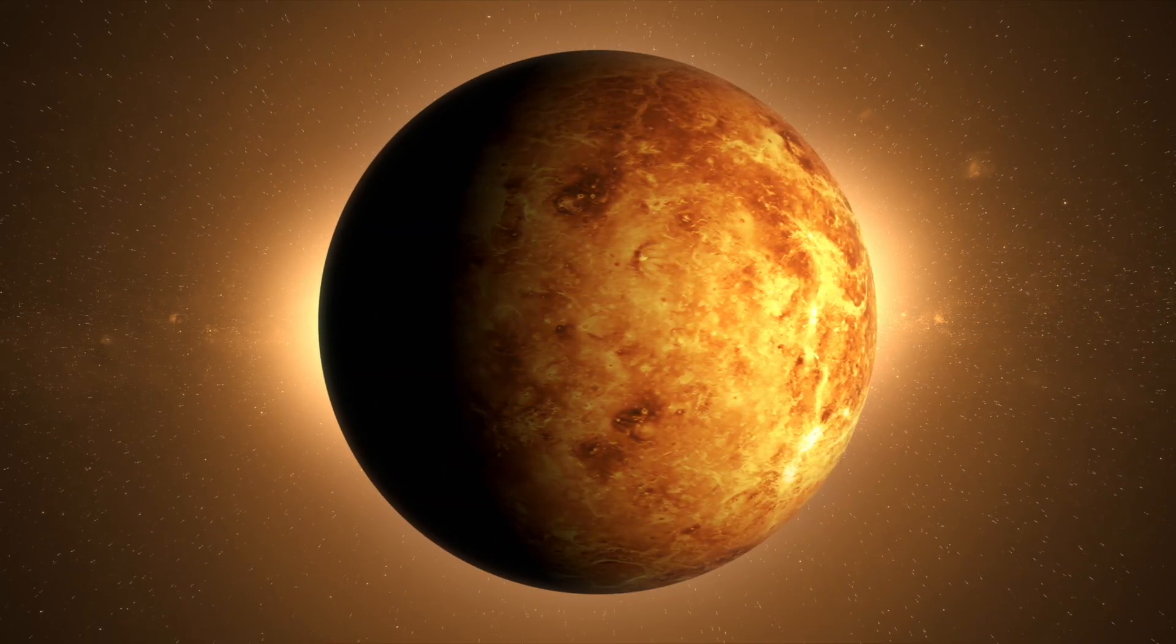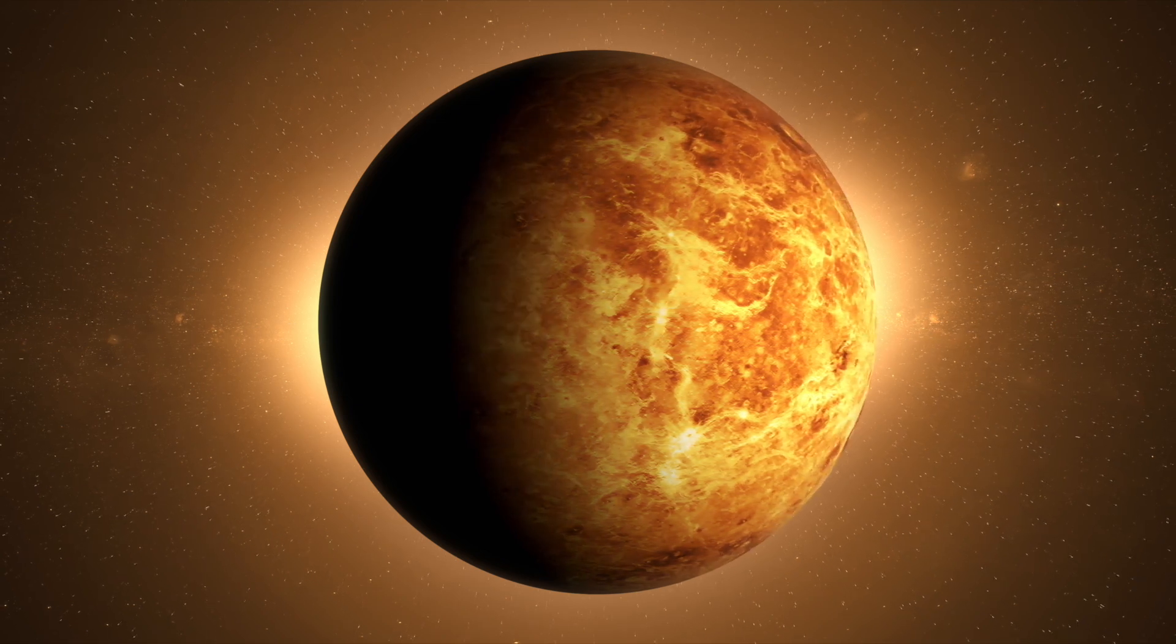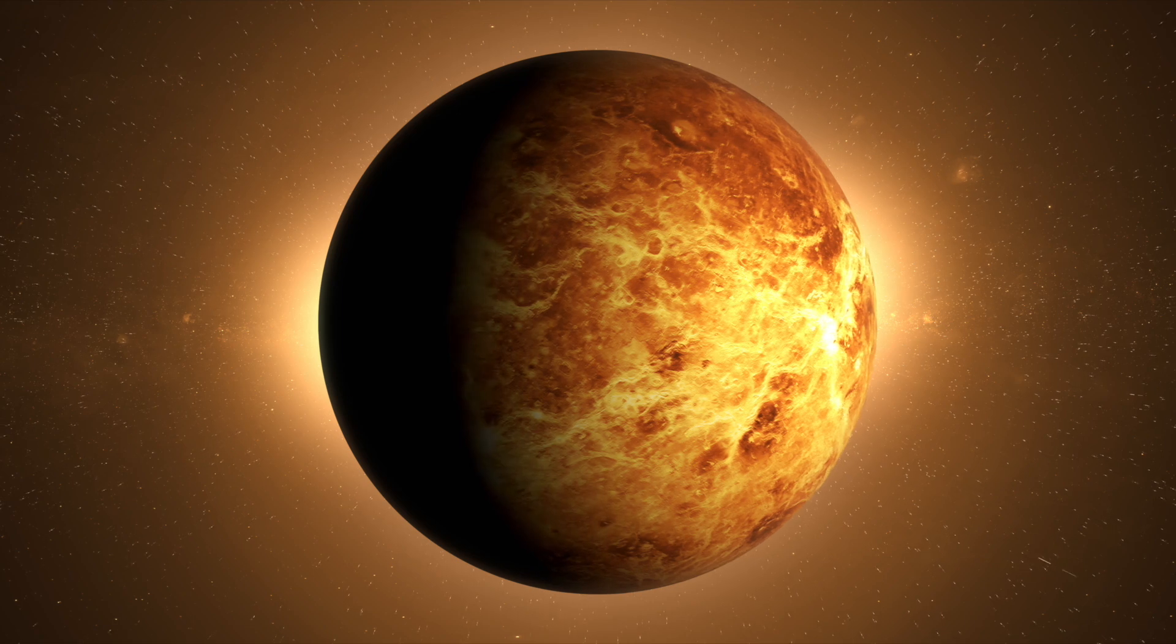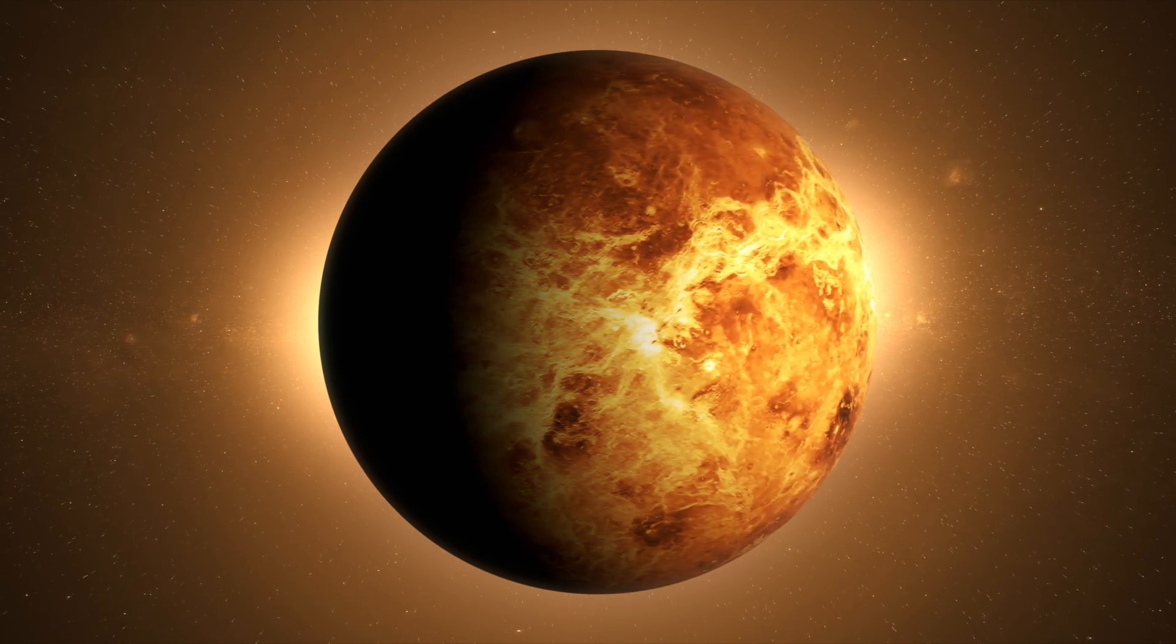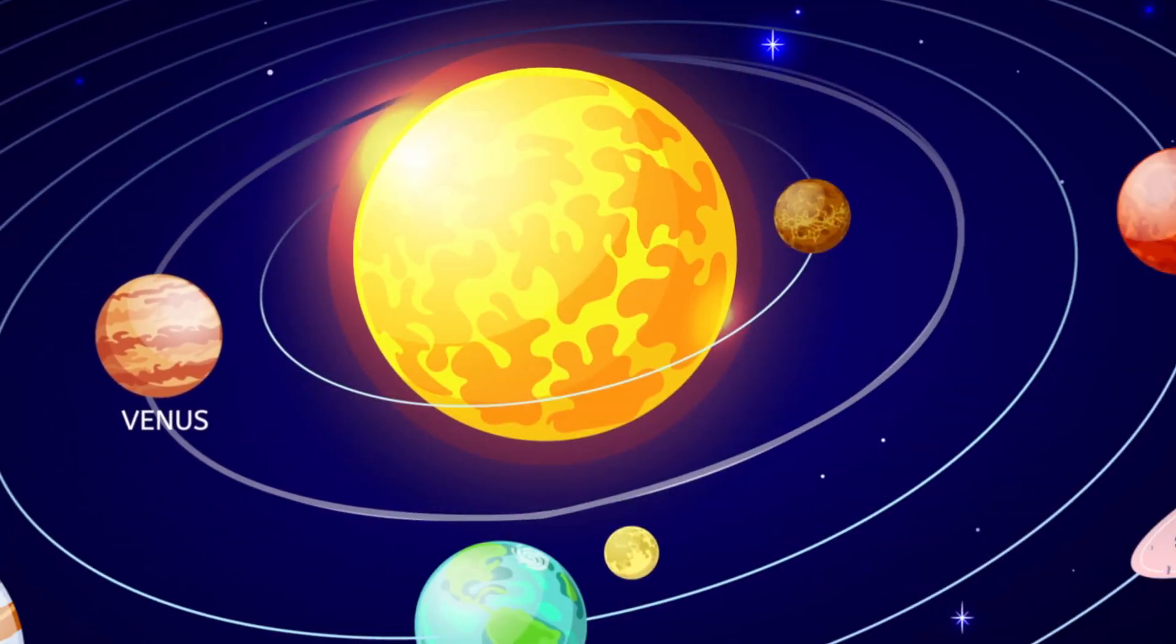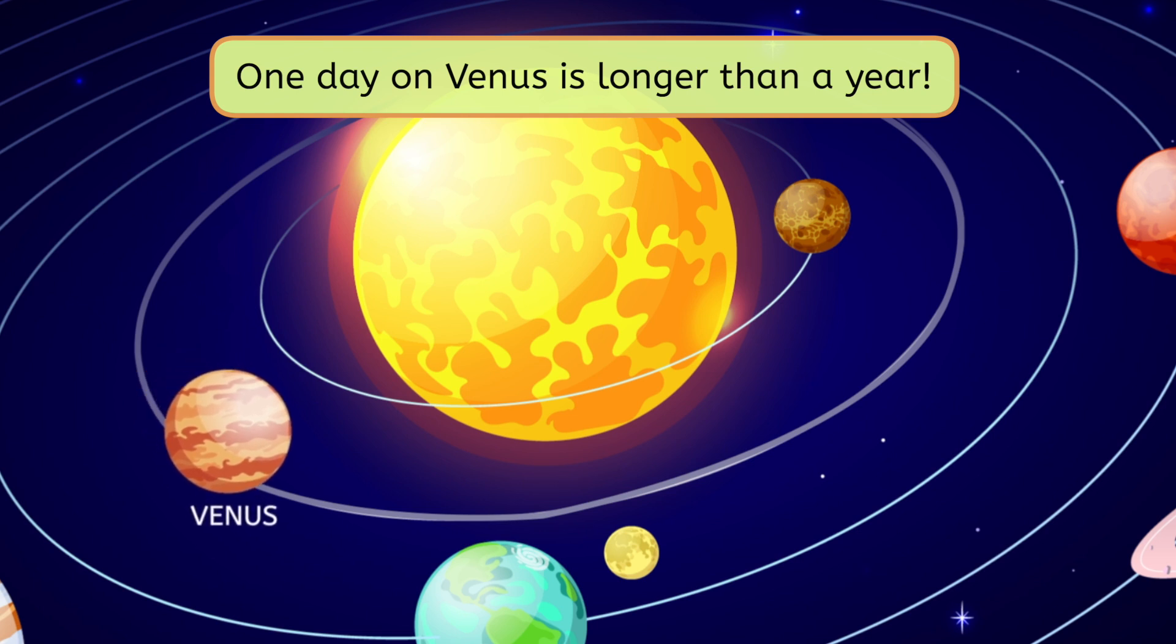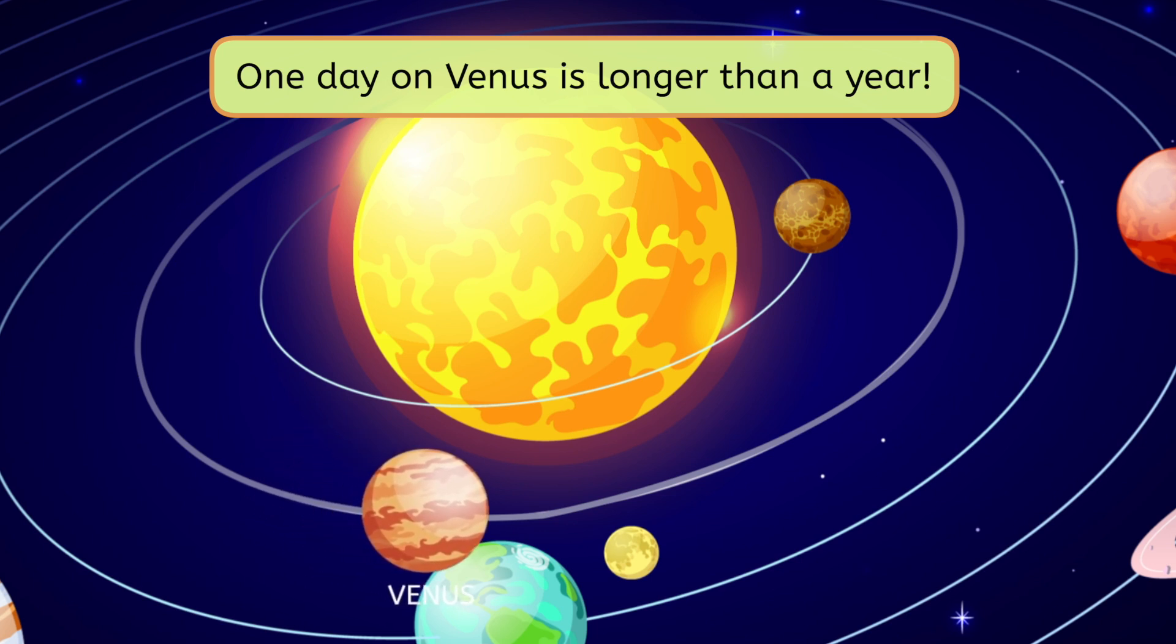Speaking of days and nights, Venus is a bit unique. What do you notice about how Venus is rotating compared to Mercury and Earth? Venus rotates the opposite direction. This means the Sun rises in the west and sets in the east. To add to the peculiarity, one day on Venus is 243 Earth days, while a year is 225 Earth days. This means a day on Venus is longer than a year.